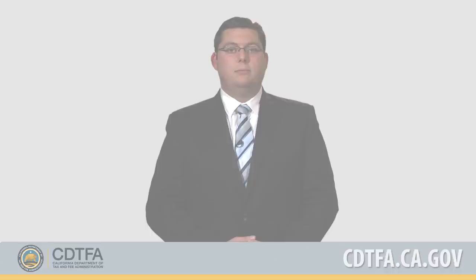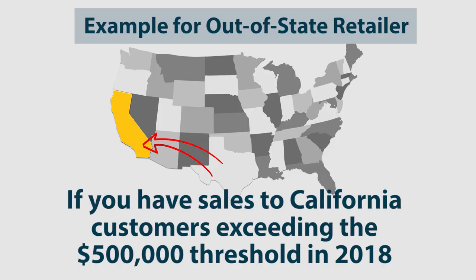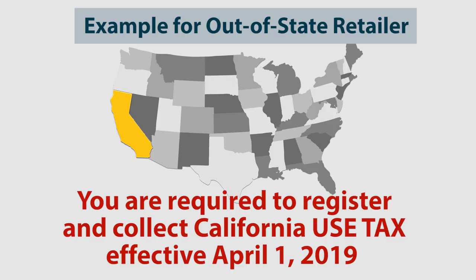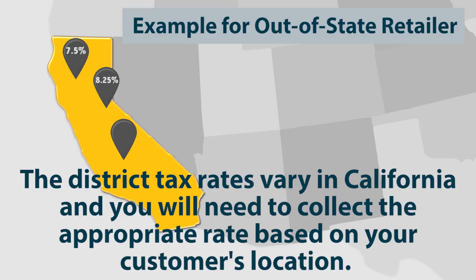If you're an out-of-state retailer, here's an example. If you sell portable blenders to customers in California and made sales exceeding the $500,000 threshold in 2018, you are required to register and collect California use tax effective April 1, 2019. The district tax rates vary in California, and you will need to collect the appropriate rate based on your customer's location.